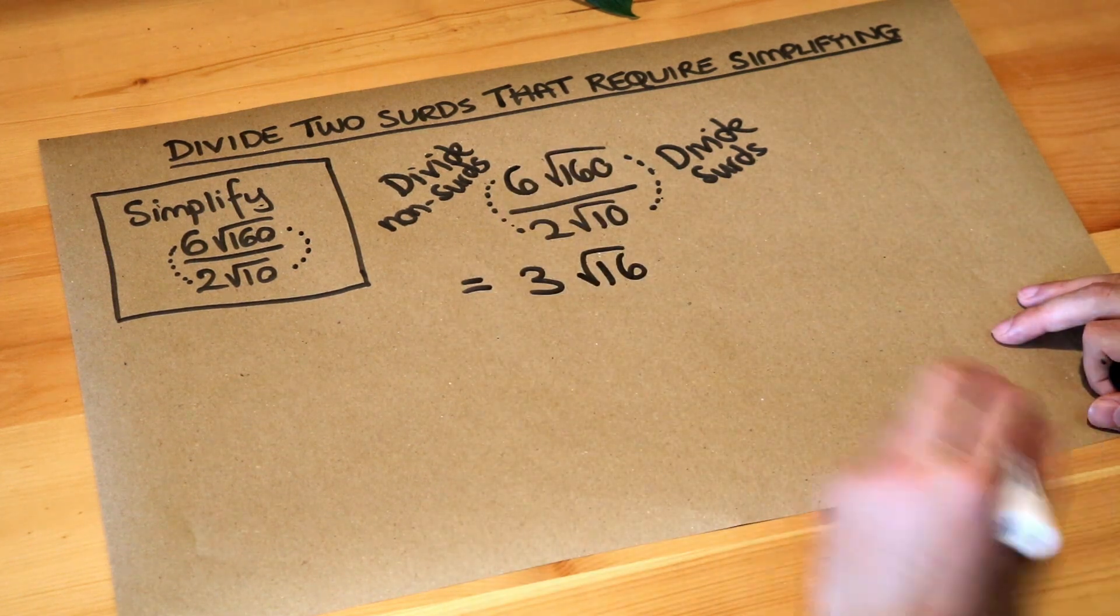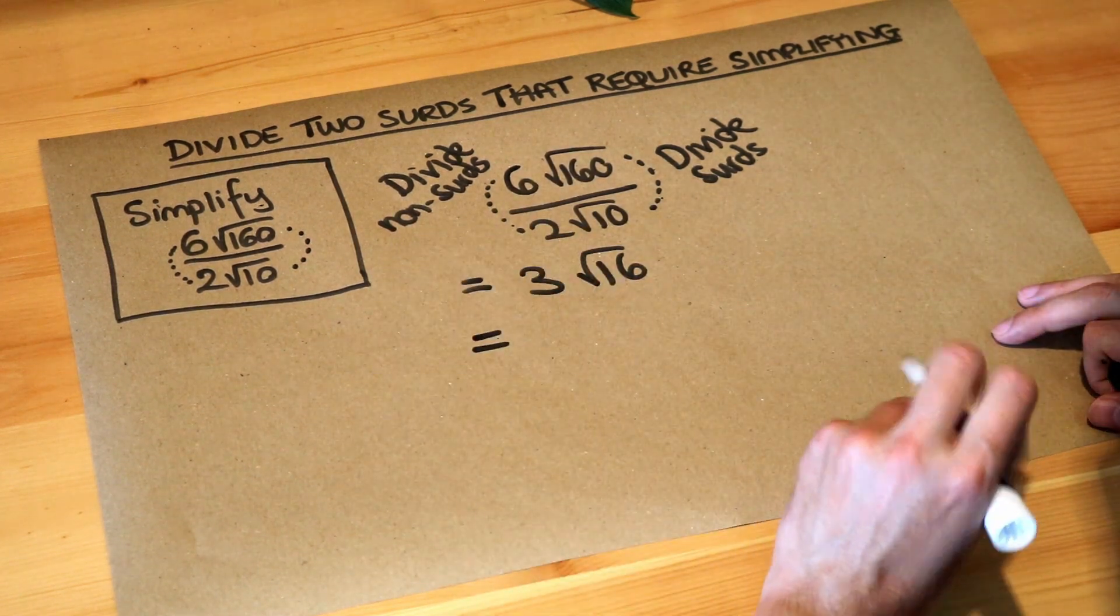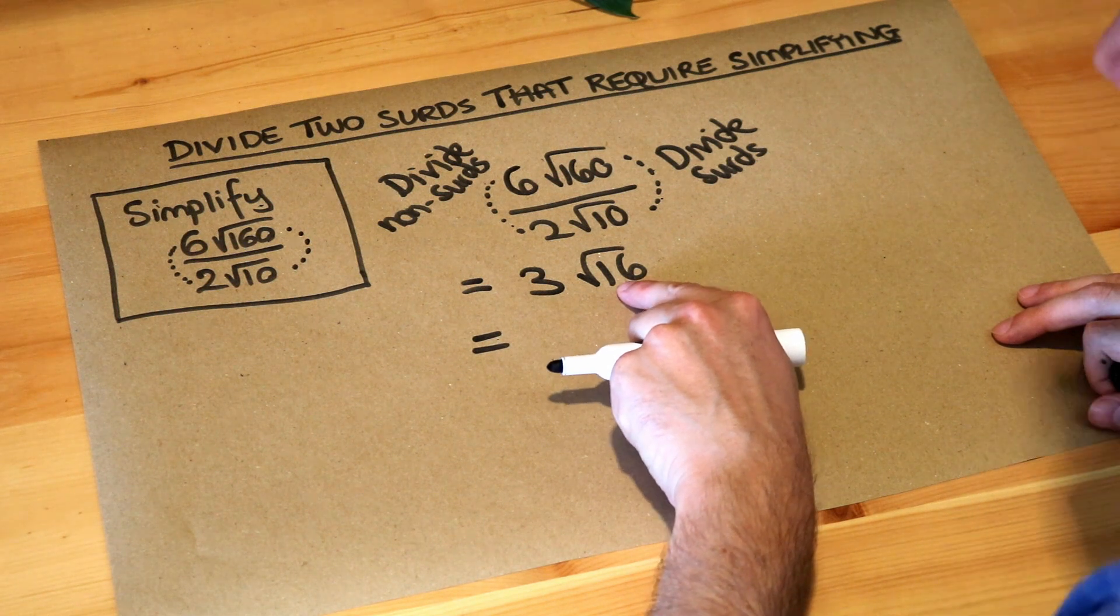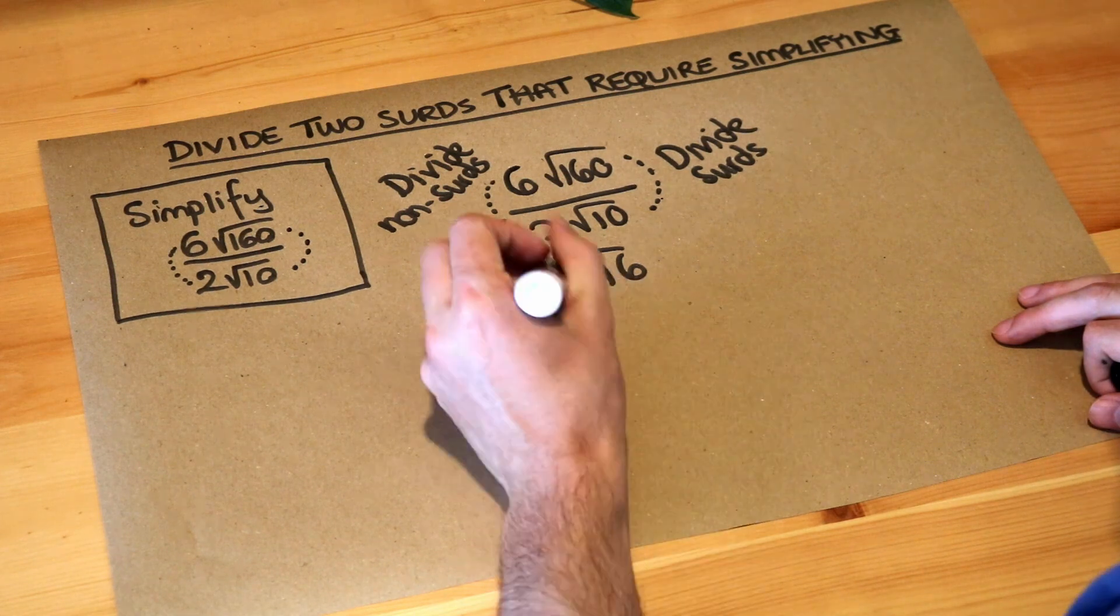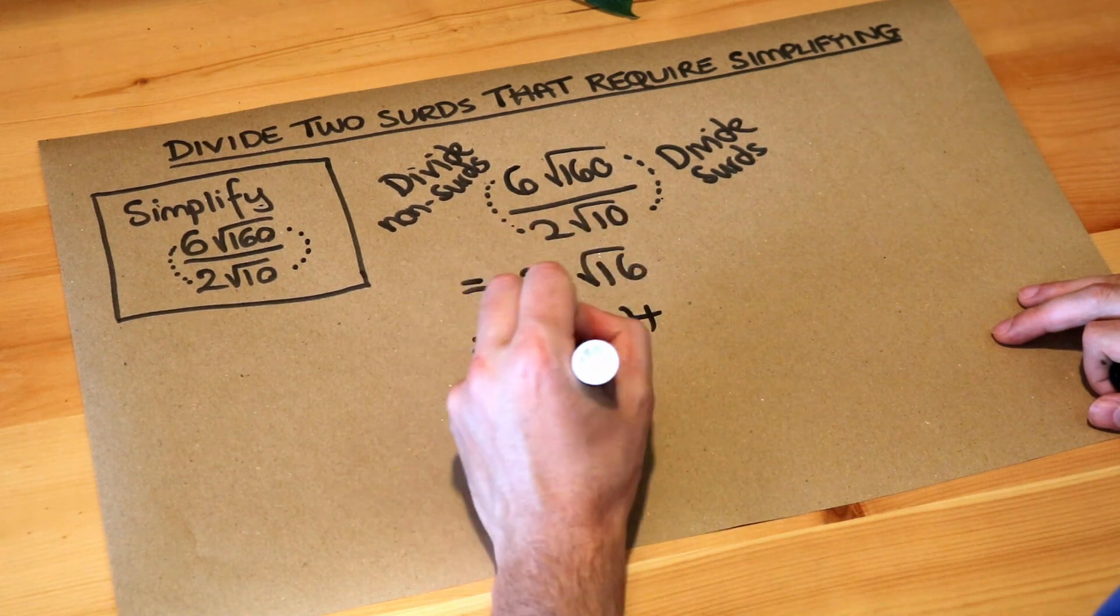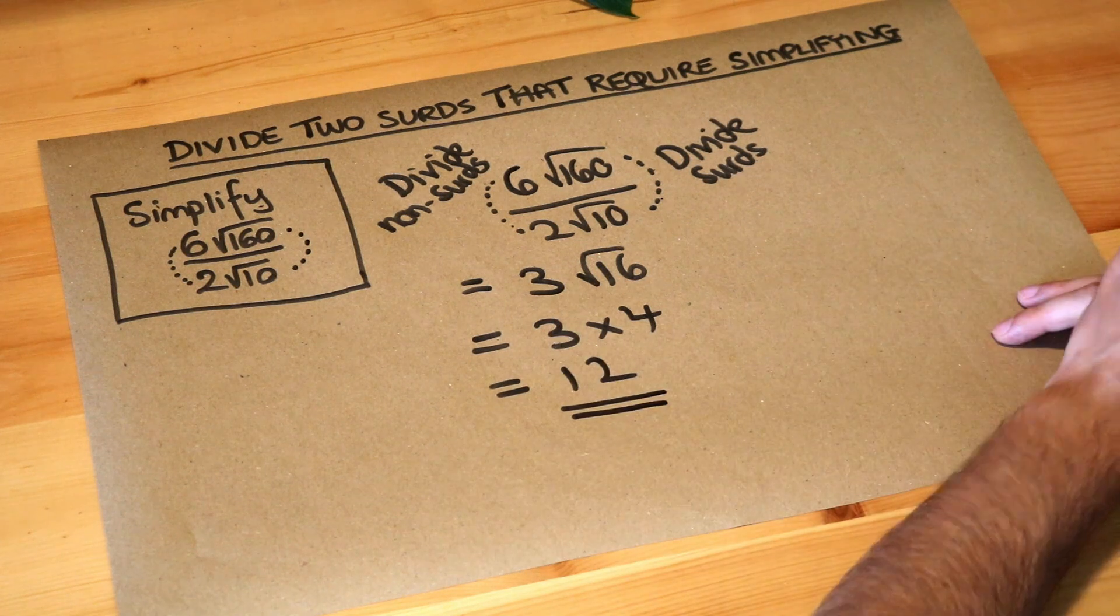And now we've got something much simpler that we still need to simplify. What's the square root of 16? Well it's just 4, so we've got 3 multiplied by 4, and that is just 12. And that is the final answer.